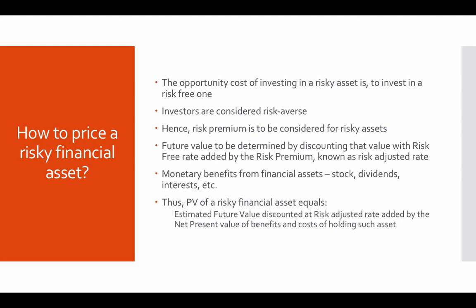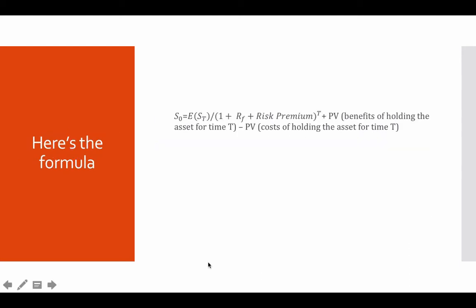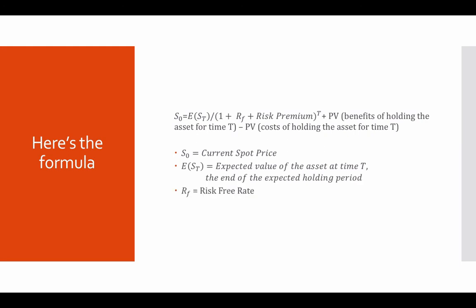Mathematically, the formula is: S₀ = E[Sₜ] / (1 + r_f + r_m)^t + PV(benefits of holding the asset for time t) − PV(costs of holding the asset for time t). Here, S₀ is the current spot price, E[Sₜ] is the expected value of the asset at time t (the end of the expected holding period), and r_f equals the risk-free rate.